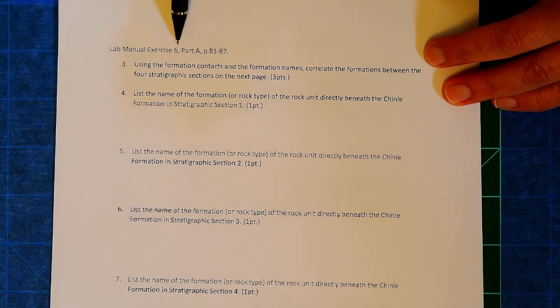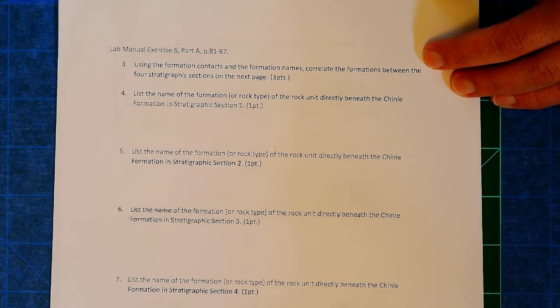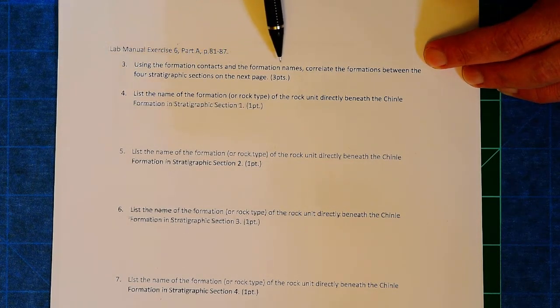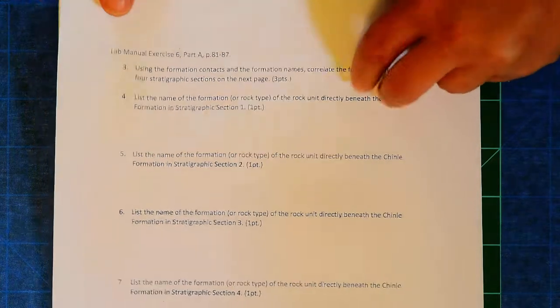Lab manual exercise six, part A, you are going to correlate some stratigraphy. Using the formation contacts and the formation names, correlate the formations between the four stratigraphic sections on the next page.